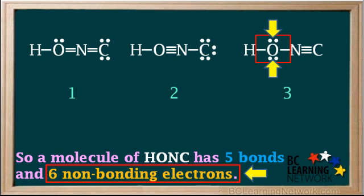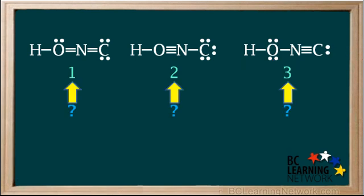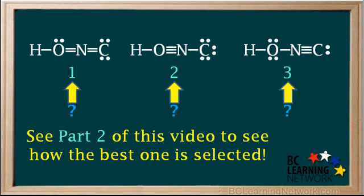In structure three, we add two lone pairs to the oxygen atom to give it a stable octet. Nitrogen has four bonds, so it already has a stable octet. We add one lone pair to carbon to give it a stable octet. This accounts for all six non-bonding electrons in structure three. The question now is which is the best Lewis structure — structure one, two, or three? In part two of this video, we'll see how the best one is selected.